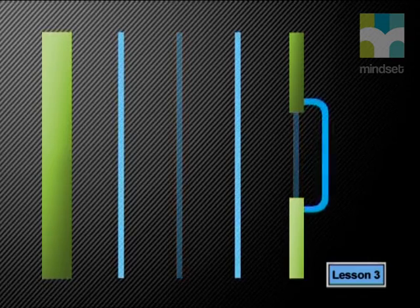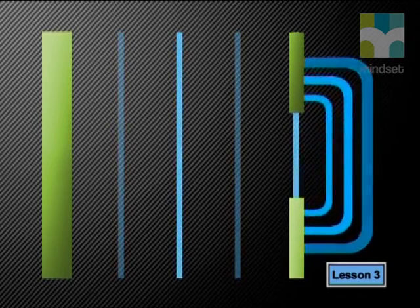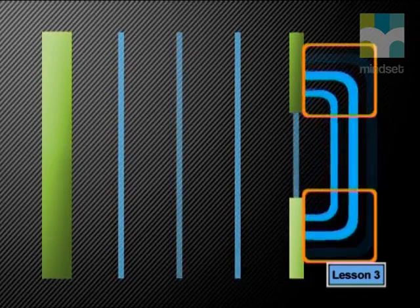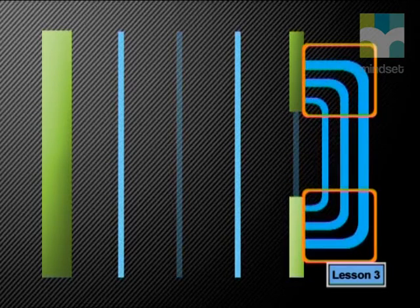Now see what happens if we place two barriers close together. There are now two edges. Straight wave fronts move towards this wide gap in a barrier. As they enter the gap, they don't simply move straight ahead. They spread out and form small circular waves where they go around the edges of the gap.